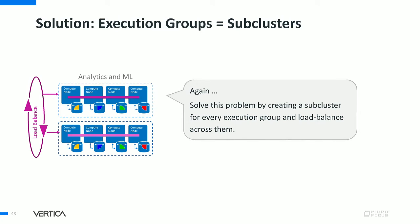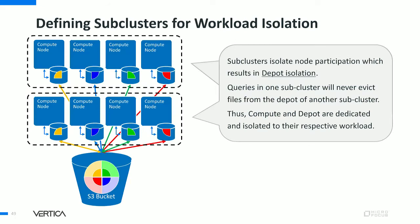To solve the non-deterministic participation problem, you can declare subclusters — in this case, two subclusters with a load balancer group across them. Session participation cannot cross subcluster boundaries, so no node will be double-booked. And in terms of depot isolation, if you carefully send the first workload to the first subcluster and the second to the second subcluster, the first subcluster maintains data files for the first query and you don't need to worry about files being evicted by the second kind of session.